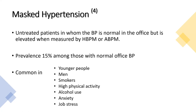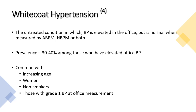Masked hypertension occurs in untreated patients with normal office BP but elevated home or ambulatory BP. These patients may have hypertension-mediated organ damage despite normal office readings. Its prevalence is about 15% among those with normal office BP. It is more common in younger people, men, smokers, and those with alcohol use, high physical activity, anxiety, and job stress — the opposite demographic to white coat hypertension.